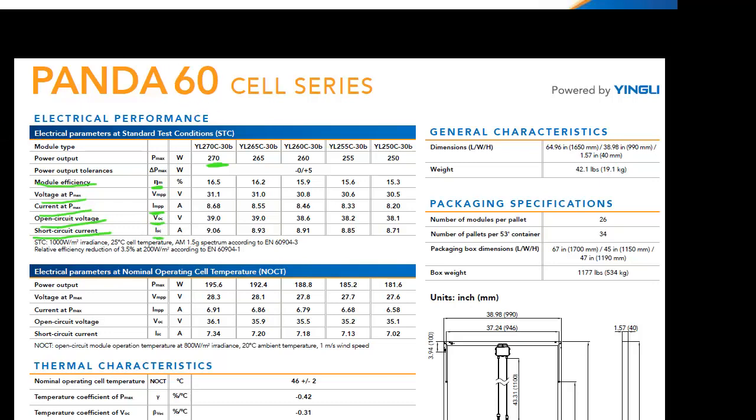And again, I note over here that these are specified for two cases. One is a standard test condition. And if you read the footnotes over here, they say again that standard test condition, it corresponds to a thousand watt per meter squared. With a cell held at a temperature of 25C and the AM 1.5G spectrum.